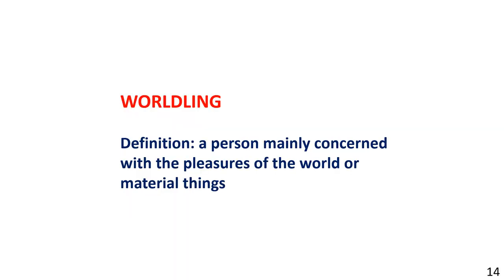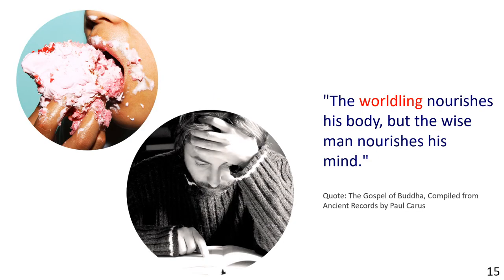And finally, worldling — definition: a person mainly concerned with the pleasures of the world, or material things. One picture shows a person stuffing a lot of food into their mouth, and the other shows a man concentrating as he studies. Sentence example: The worldling nourishes his body, but the wise man nourishes his mind.